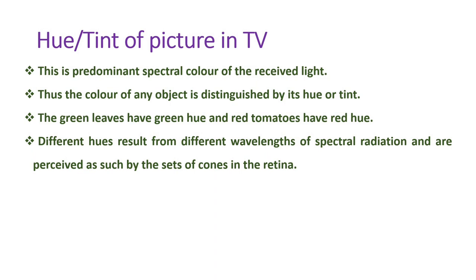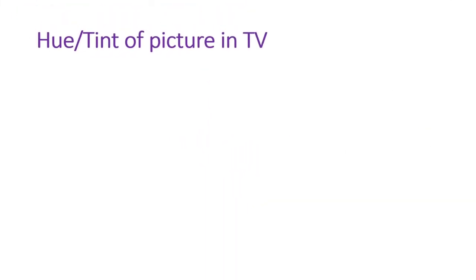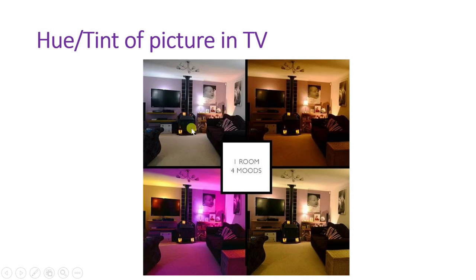Let us understand hue by diagrams. Here one room is shown in four different photographs — the room and its colors are the same, but different lighting creates different hues. In one photograph the hue is whitish; in another it is slightly orange. Different colored lighting creates different hues. So hue is the predominant spectral color that can be created by the original object or by lighting conditions.